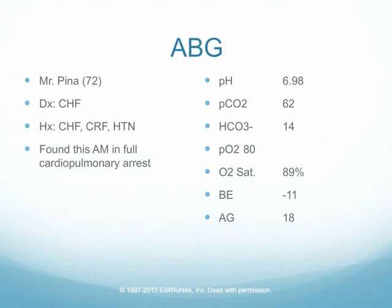Let's look at an example. Mr. Pina is a 72-year-old with a diagnosis of congestive heart failure. His history includes heart failure, renal failure, and hypertension, and he was found this morning in full cardiopulmonary arrest. His blood gas results: pH 6.98, CO2 62, bicarb 14, PO2 80, oxygen saturation 89%, base excess minus 11, and anion gap of 18.